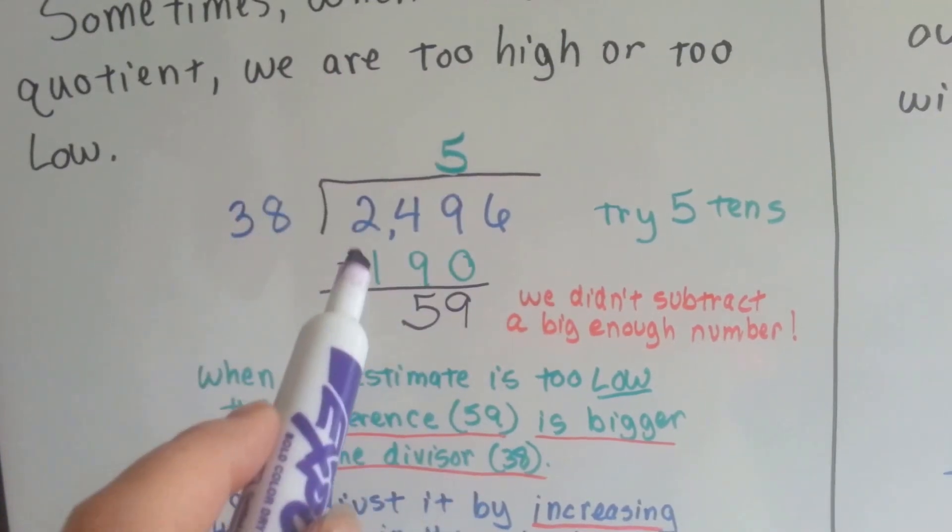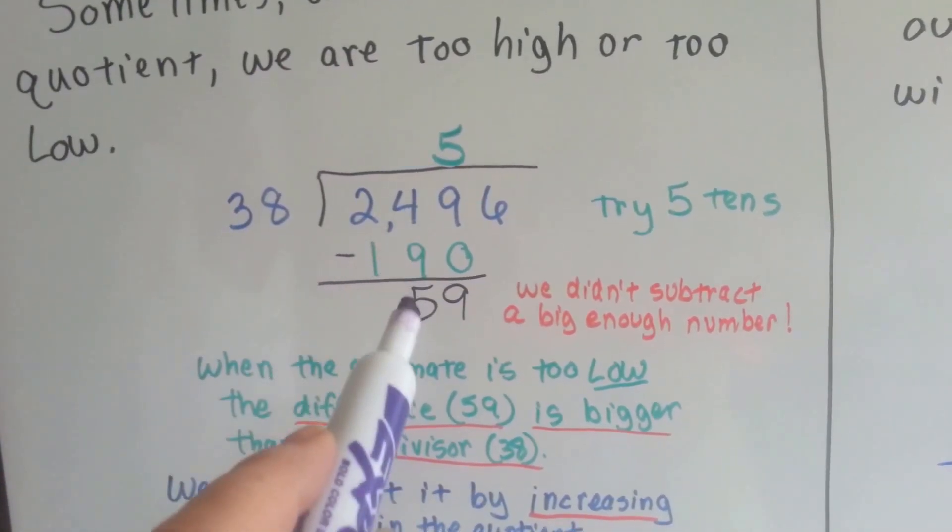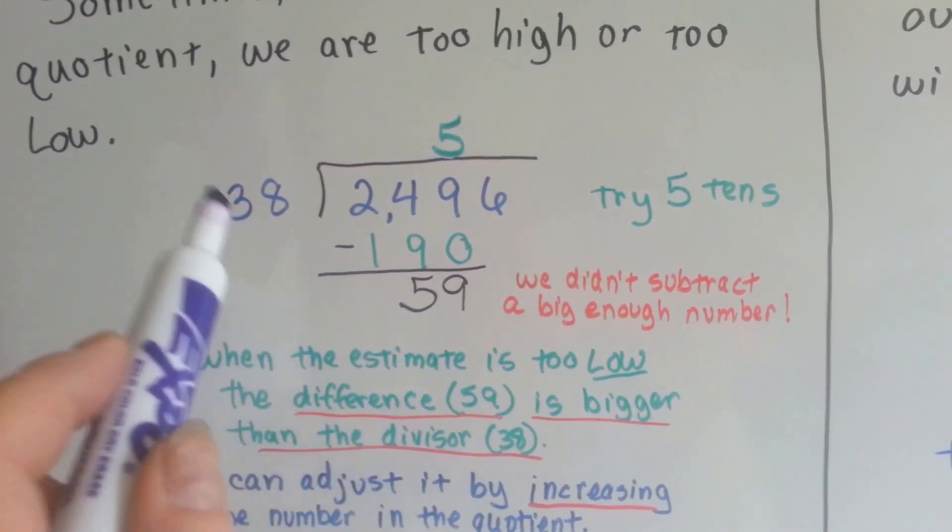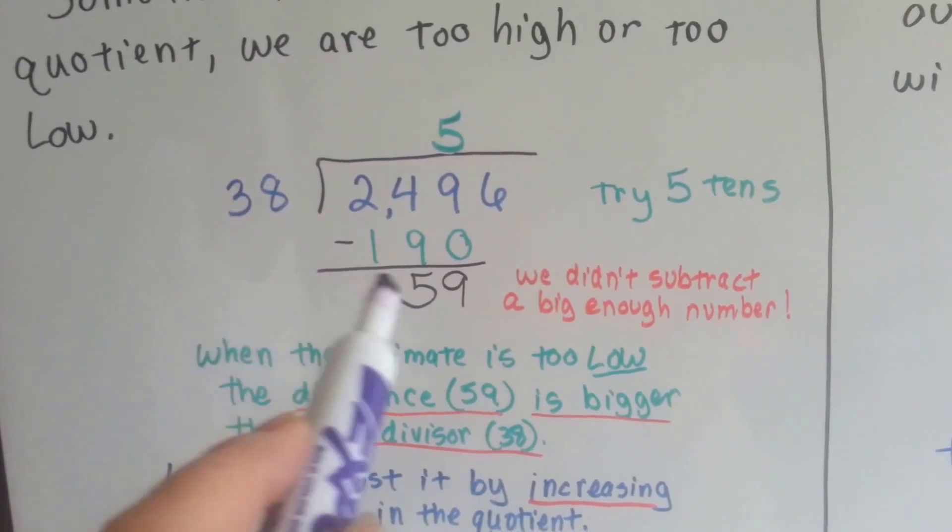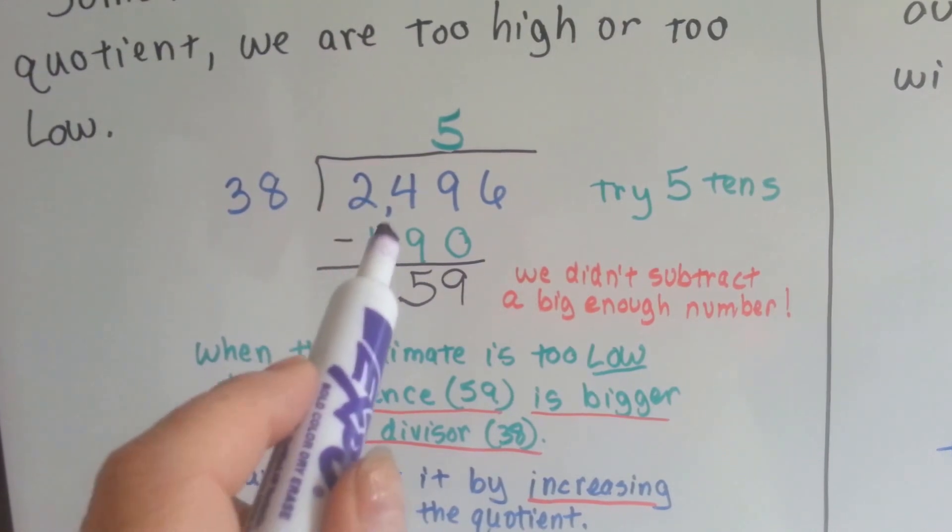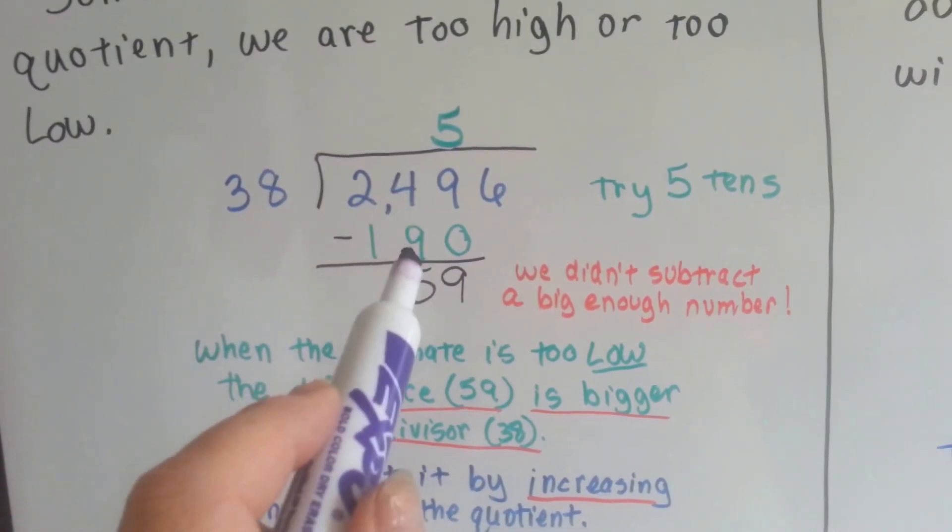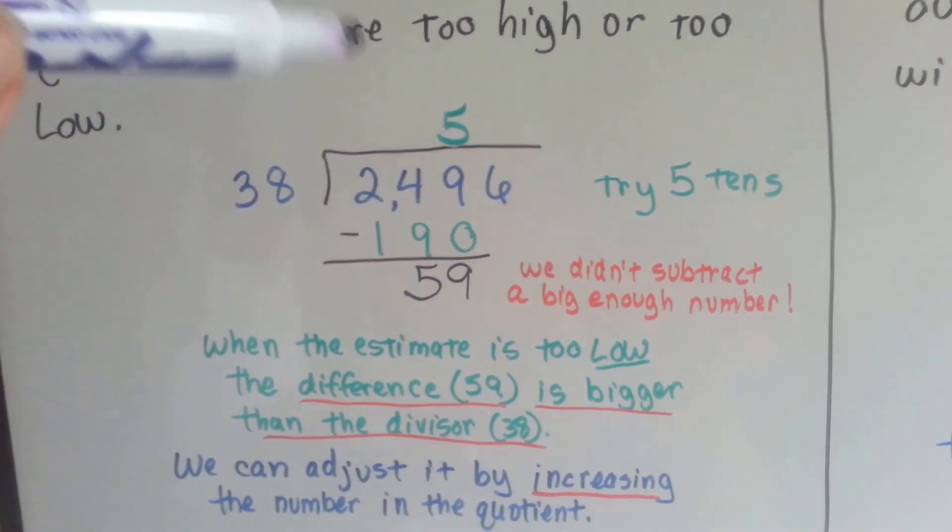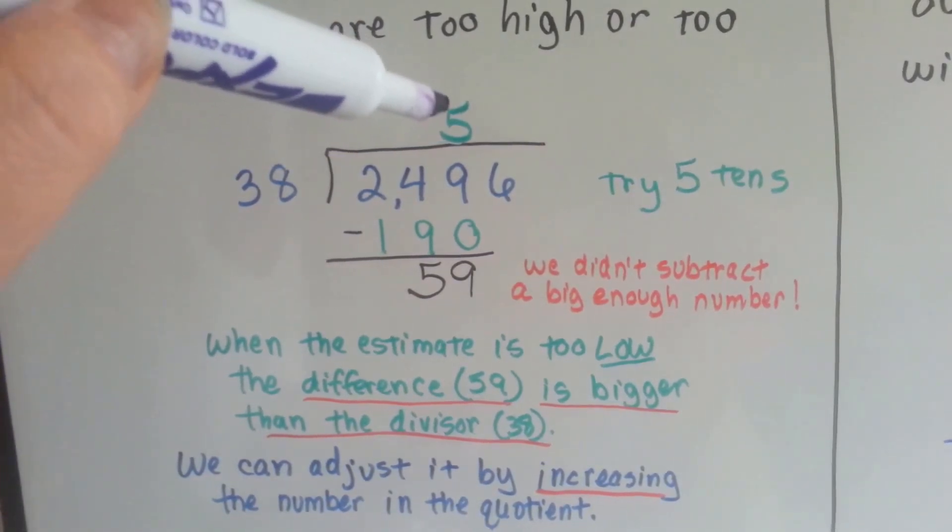38 times 5 is 190. When I did the subtraction, I got a 59, which is way bigger than this 38. So we didn't subtract a big enough number from the 249. That tells me that we were too low. We needed to go with a bigger number here.